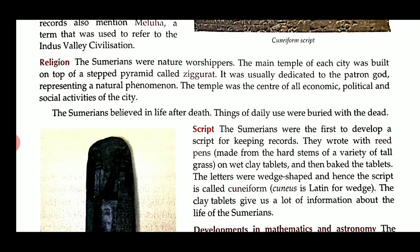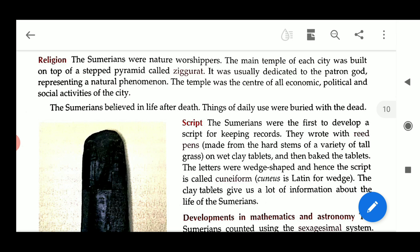We can call it a stylus — a pen made from the hard stems of a variety of tall grass — pressed on wet clay tablets which were then baked. Baked means these are prepared with the help of fire. The letters were reed-shaped, and hence the script is called cuneiform, meaning the script uses letters shaped like reeds.